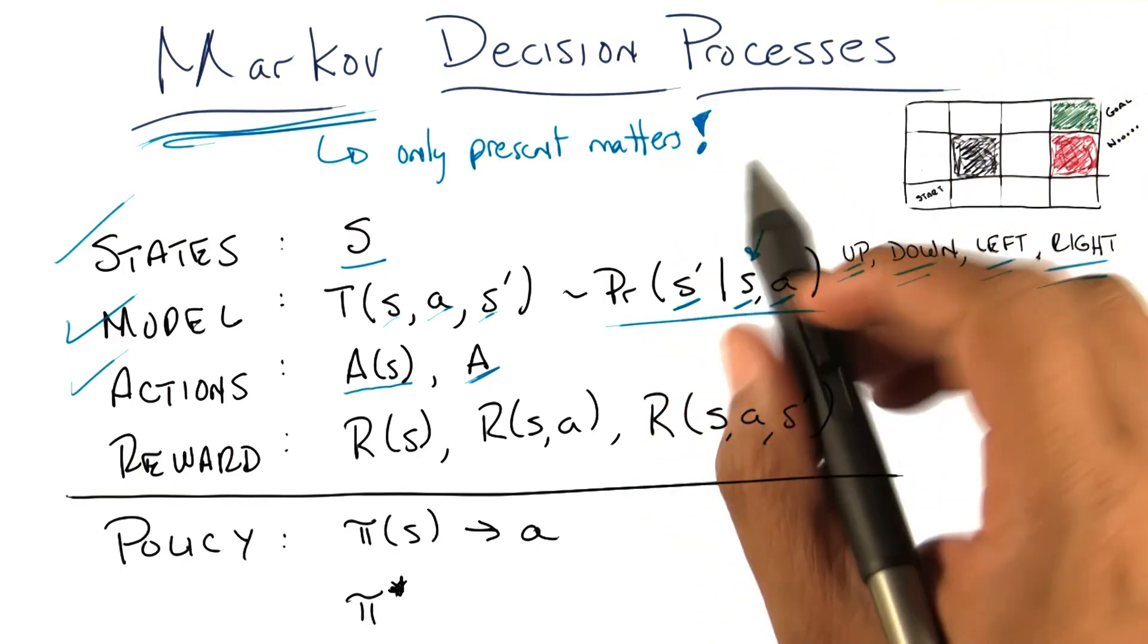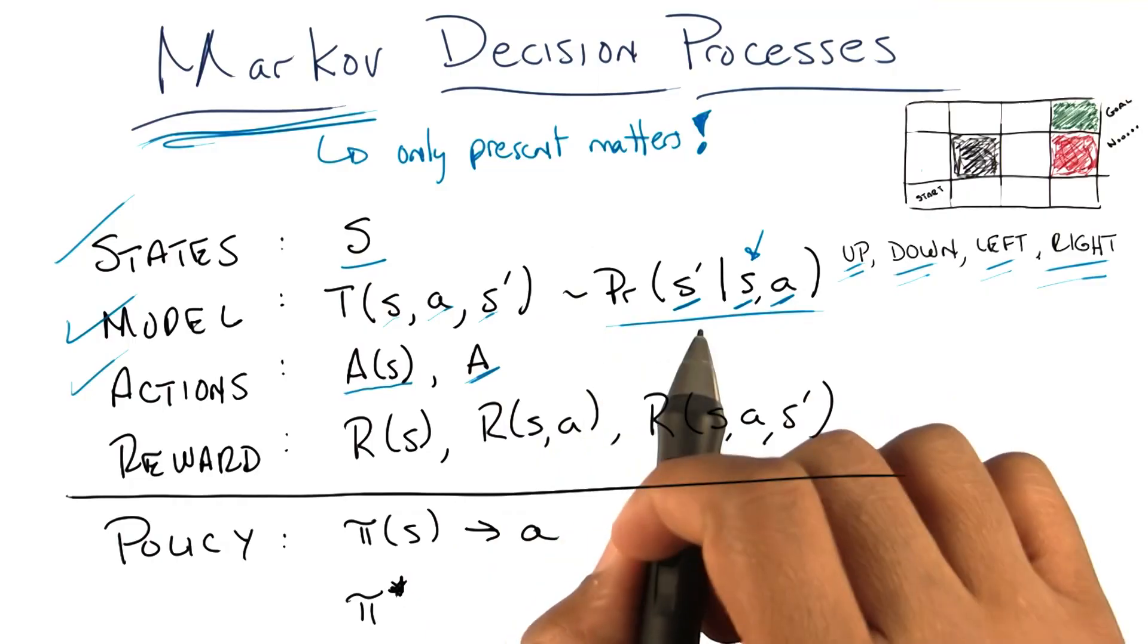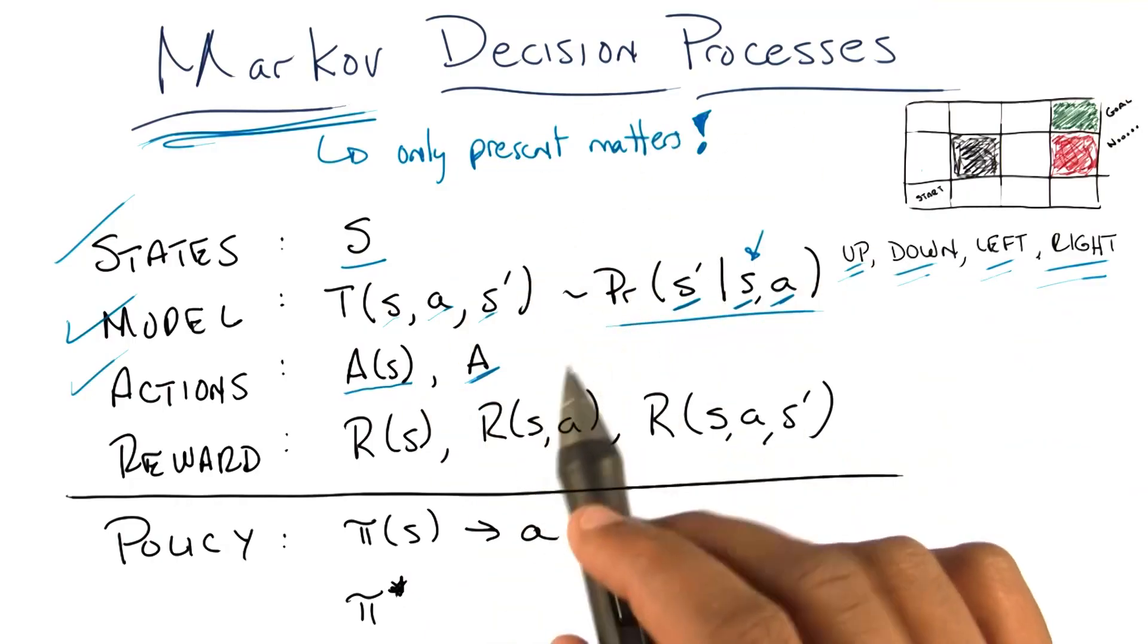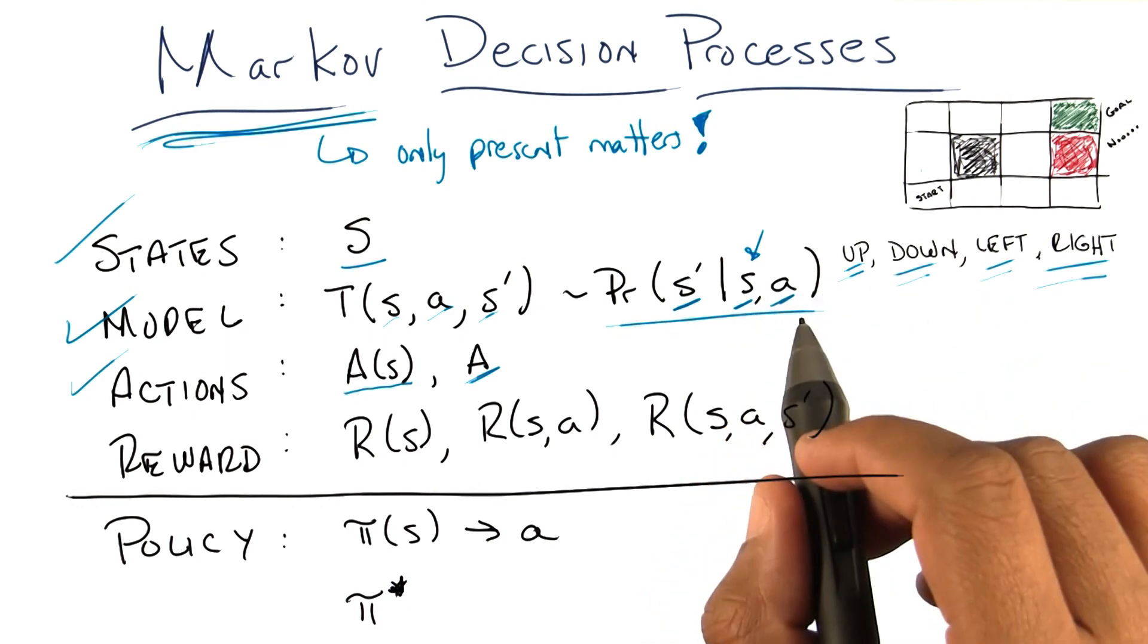And the way that mathematicians convince you that you're okay with this is to point out that you can turn almost anything into a Markovian process by simply making certain that your current state remembers everything you need to remember from the past.